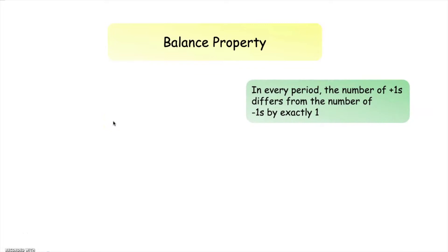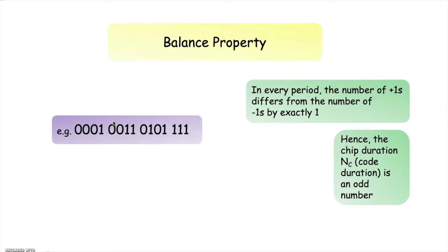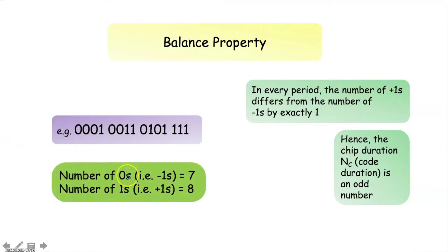Let us start with the balance property. In a spreading code, in every period the number of positive ones differs from the number of negative ones by exactly one. Hence the chip duration or the code duration for a spreading code is always an odd number. For example, let us consider this sequence — here zero corresponds to negative one and one corresponds to positive one. You can see the number of zeros is equal to seven and the number of ones is equal to eight, so that the difference is one.